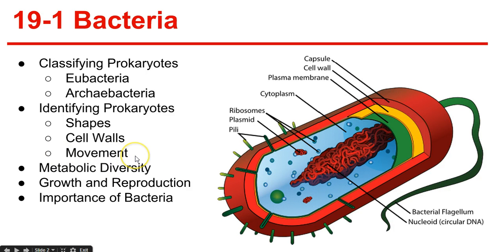Movement. Some bacteria move with flagella, while others move with cilia. Next, metabolic diversity. Heterotrophs: chemotrophs take in organic molecules for energy and carbon supply, and phototrophs use photosynthesis but also need to take in organic compounds such as a carbon source.